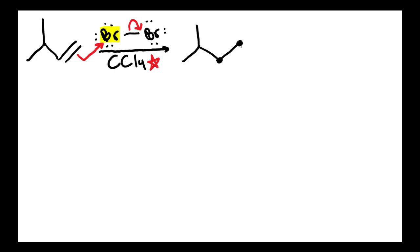I'm going to go ahead and put it on a wedge, and I'll explain that in a minute. It really doesn't matter if you want to put your first bromine on a dash or on a wedge, because a double bond is flat — the geometry of a double bond is flat sp2, so it's trigonal planar. That means the first bromine can either add on a wedge or a dash; it really doesn't matter. So I'm going to put it on a wedge.